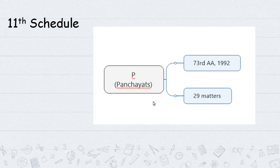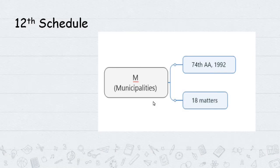The Eleventh Schedule has 29 subjects including rural planning, civil service management, and hospital administration under Panchayati Raj. The Twelfth Schedule was added by the 74th Constitutional Amendment in 1992, covering municipalities with 18 subjects related to urban planning.